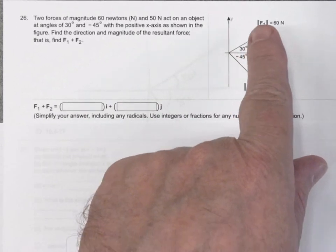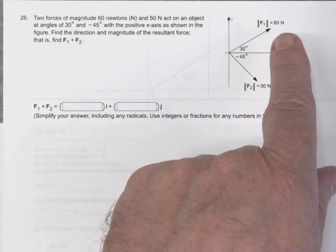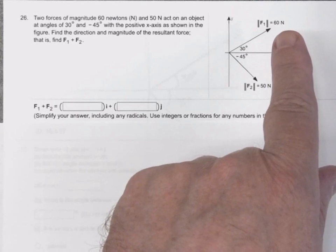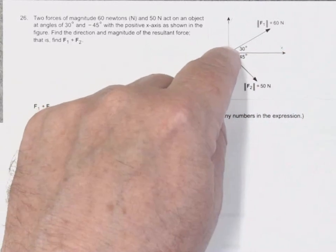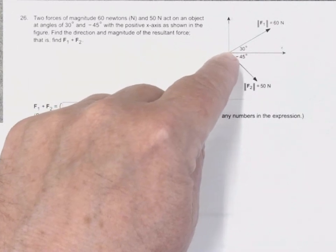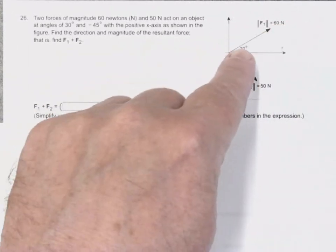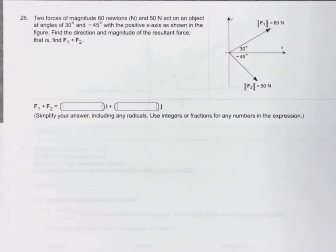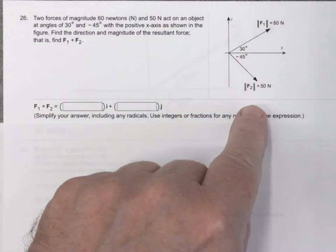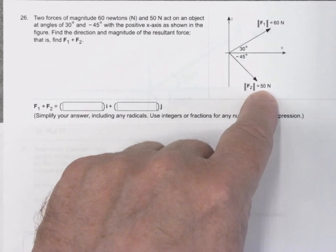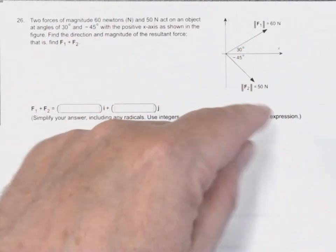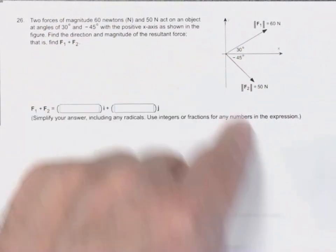We have two forces, F1, the magnitude is 60 Newtons. You can think of an object being here at the origin, and this F1 force is pushing it in a direction of 30 degrees. But there's a second force, F2, which isn't quite as strong. It's 50 Newtons, but it's pushing it more down at a negative direction of 45.